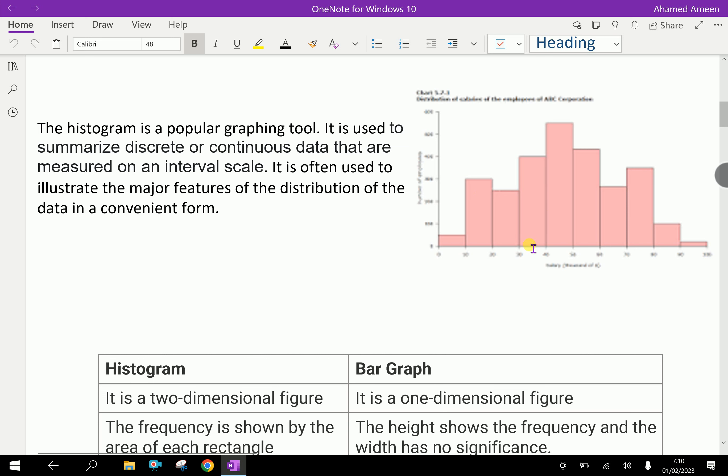This is a Histogram for some frequency distribution. Now, this is the data that are continuous. In bar graph, the spaces are there between the bars, but in Histogram, the bars are connected together. So, it is a discrete and continuous variable.